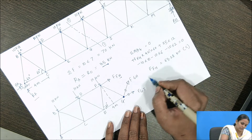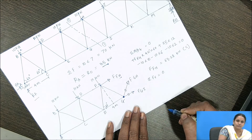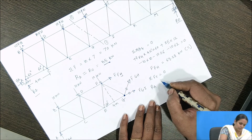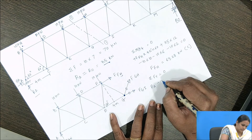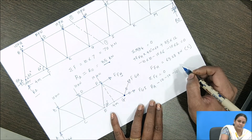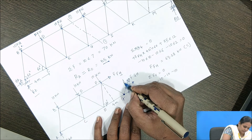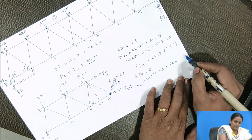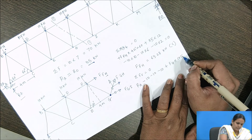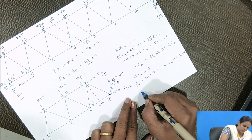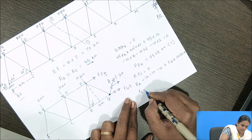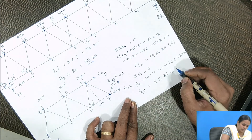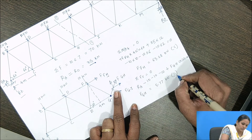Next, applying the sum of all vertical forces equals zero: RA minus 10 minus 10 minus 10, plus the vertical component of force GH (which is force in GH times cos 60) equals zero. From this equation, the force in member GH equals 5.77 kilo newton. Again we get a negative value, so although we assumed it as tensile, the exact nature of force in GH is compressive.